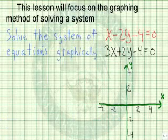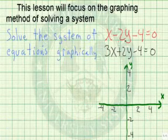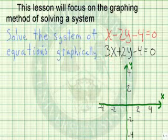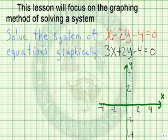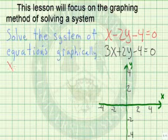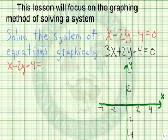Let's solve the system of equations graphically: x minus 2y minus 4 equals 0, and 3x plus 2y minus 4 equals 0. So let's take the first equation, x minus 2y minus 4, and solve this for y.